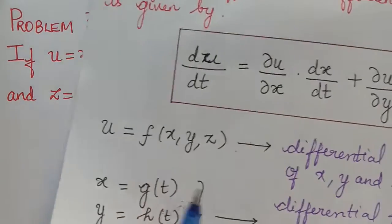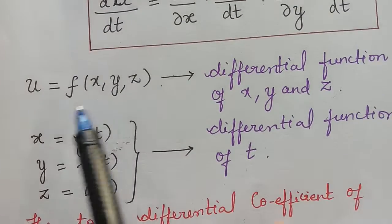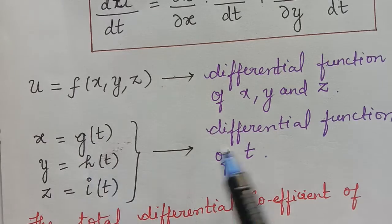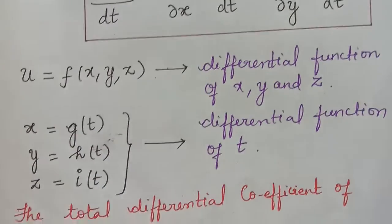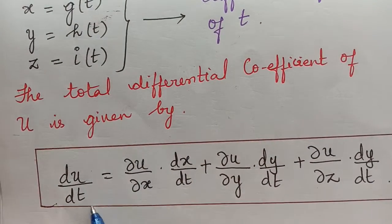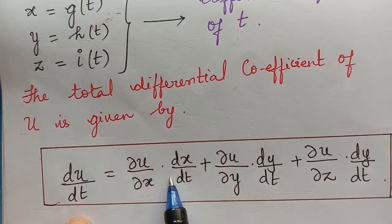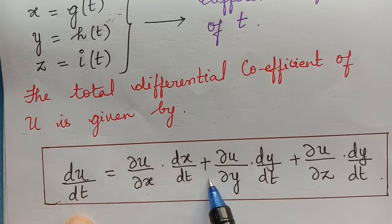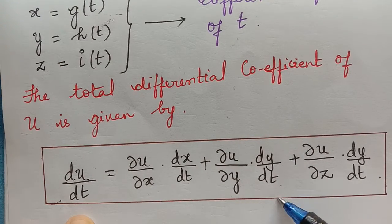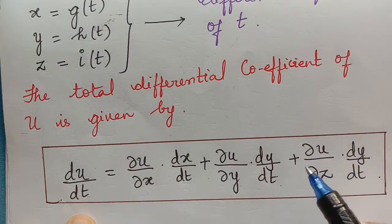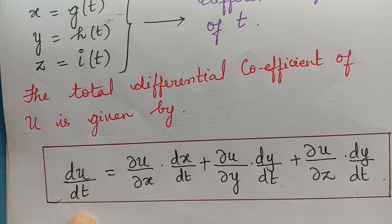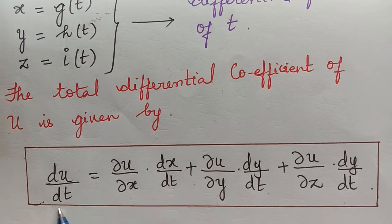We already saw the theory part where we learnt that when the function u is a differential function of x, y, z and x, y, z are differential functions with respect to t, then the total differential coefficient du by dt is equal to ∂u/∂x multiplied by dx/dt, plus ∂u/∂y multiplied by dy/dt, plus ∂u/∂z multiplied by dz/dt. Now let us take and write this formula.